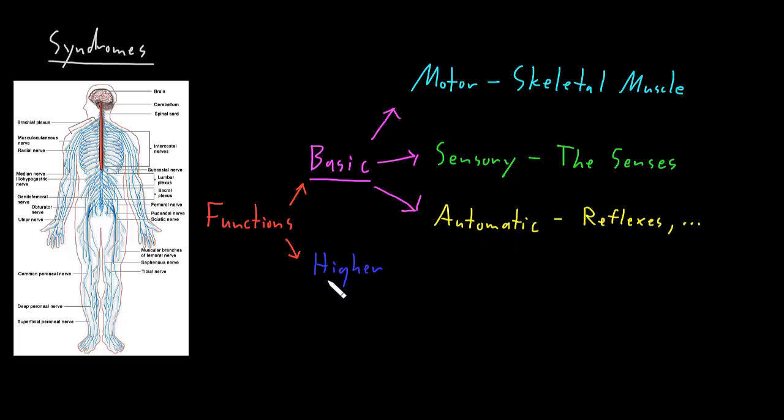But now the higher functions of the nervous system are not performed by huge areas of both the central and the peripheral nervous system. The higher functions are performed by parts of the brain. And like the basic functions of the nervous system, I like to divide up the higher functions of the nervous system into three big categories.